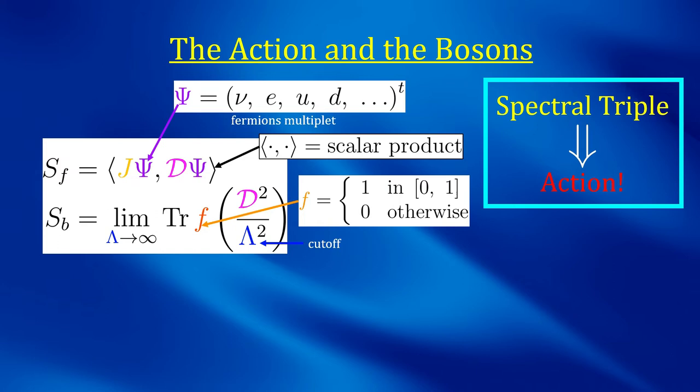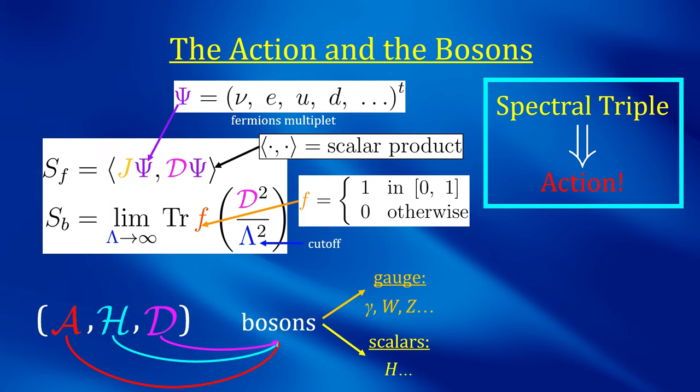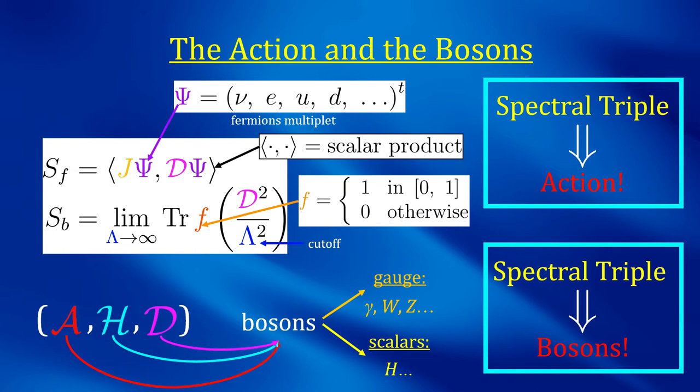Actually, the theory isn't the only thing that is completely determined by the spectral triple. Also the bosonic content of the theory is. And this doesn't only concern gauge bosons, but scalars as well. One can choose the fermionic content of the theory. That's what the Hilbert space is there for. But the bosons are completely fixed by the spectral triple. In other words, non-commutative geometry unifies the description of all bosonic fields, both vectors and scalars.